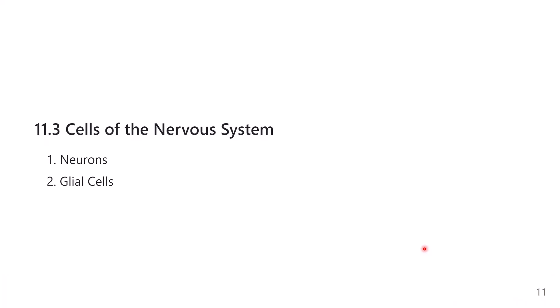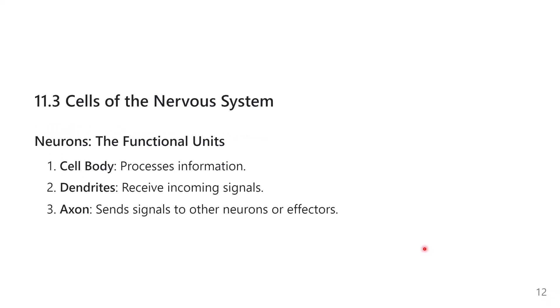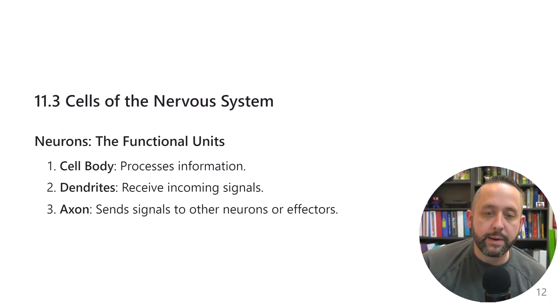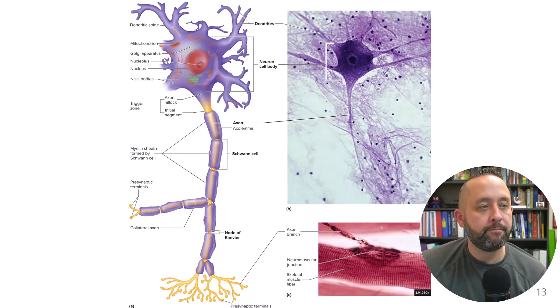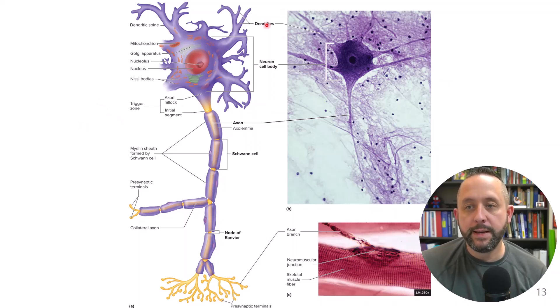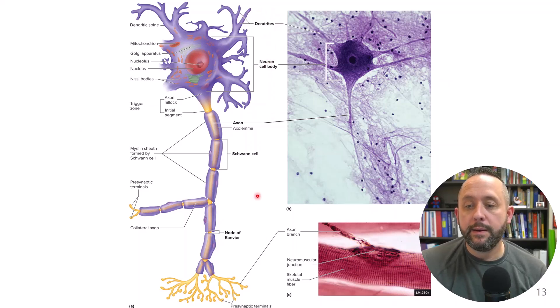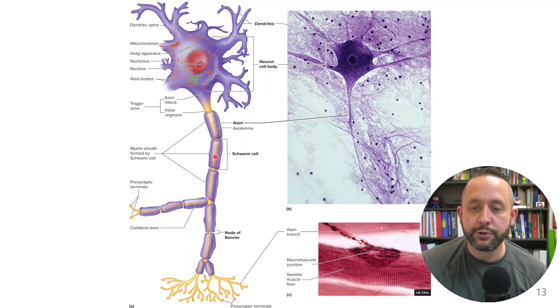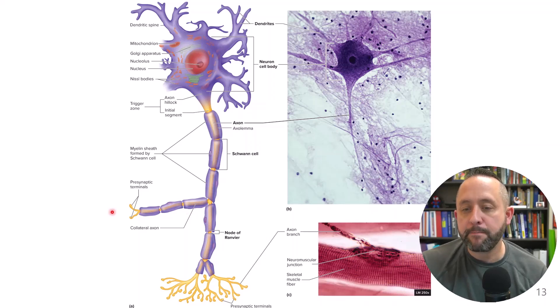Cells in the nervous system fall into two main categories: neurons and glial cells. Neurons are the functional unit of the nervous system — the cells that can be excited, have a signal propagated through them, and elicit a response. The basic parts are the dendrites, from the Greek word for tree, the axon, and the cell body. What we haven't fully discussed yet is the myelin sheath. Not all axons will have this, and we'll talk about its function shortly.